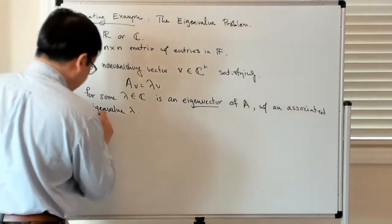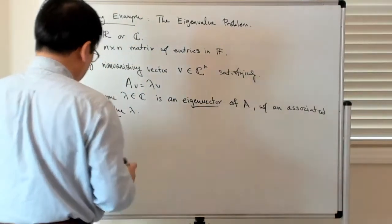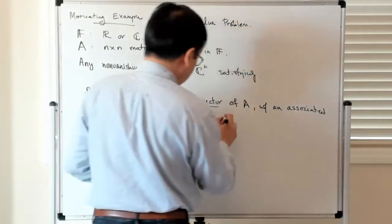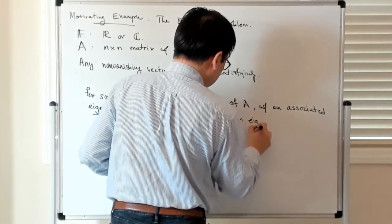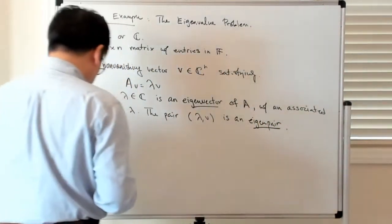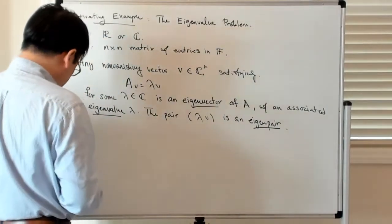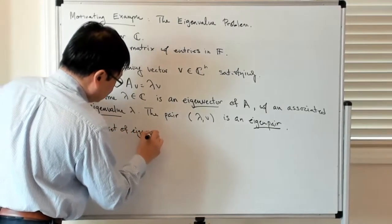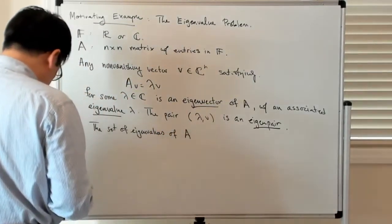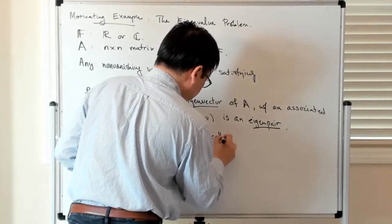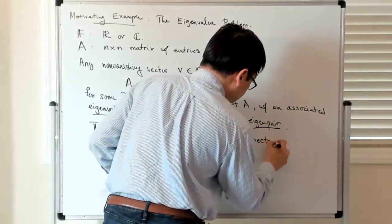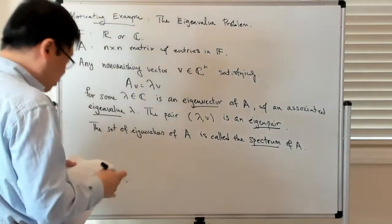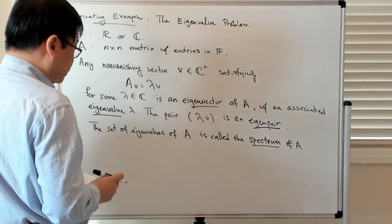That's fairly standard. And then of course the pair lambda, V is called an eigenpair. And the set of eigenvalues of A is the spectrum. The eigenvalues of A are the zeros, or roots, of the characteristic polynomial.